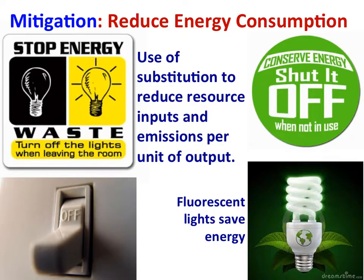A mitigation strategy to reduce the causes of climate change would be to reduce energy use — turn off lights, use fluorescent lights. This is strategy one: development of alternative technologies or the adoption of alternative lifestyles or values through campaigns, education, and economic incentive.